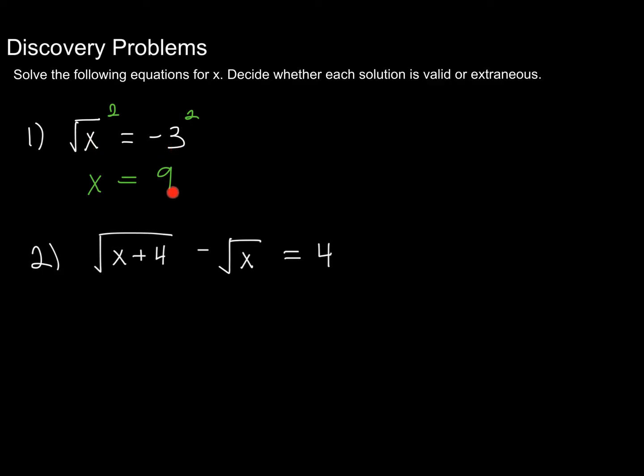And so when we do get nine, we need to make sure that we test it. And square root of nine is positive three, not negative three. Remember, we discussed that squaring always creates a positive value. Hence, we run into the possibility of getting an extraneous solution as we have here. So there are no solutions.